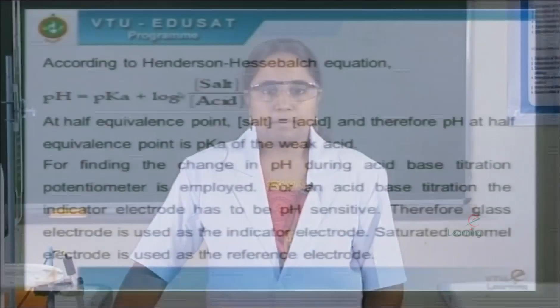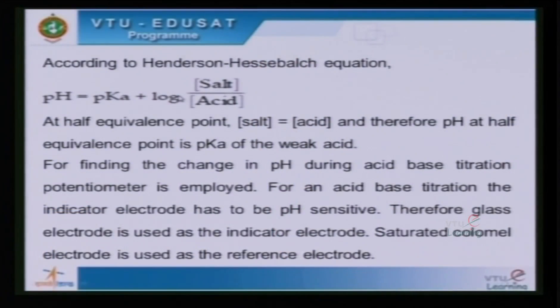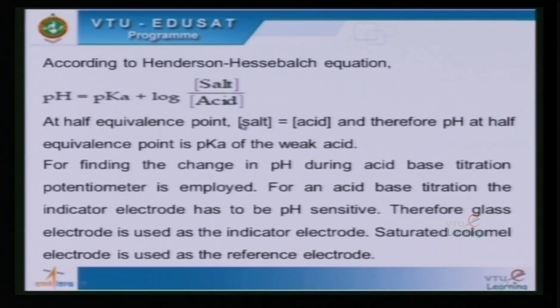According to the Henderson-Hasselbalch equation, pH = pKa + log([salt]/[acid]). At the half equivalence point, the concentration of salt equals the concentration of acid, and therefore the pH at the half equivalence point equals the pKa of the weak acid.